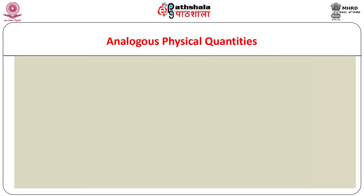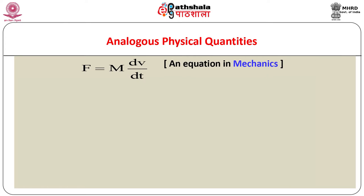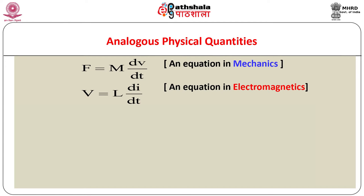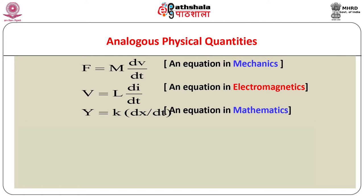Generally, using the concept of analogous physical quantities, we can convert many physical systems into an equivalent LCR circuit. The analysis of such an equivalent LCR circuit can be correlated to the actual parameters of the original physical system. To understand analogous physical quantities, consider two expressions: one for force in mechanics and another for voltage across an inductor from electromagnetics. Mathematically, both are of the same form — y = k × dx/dt. By comparison, the quantity mass in mechanics is analogous to inductance in electromagnetics.